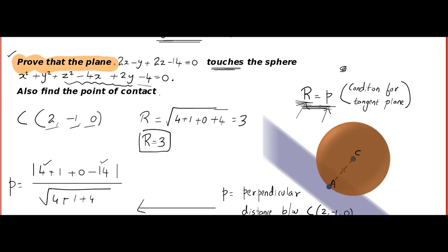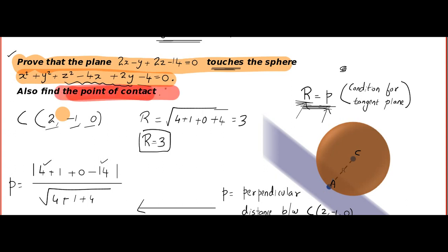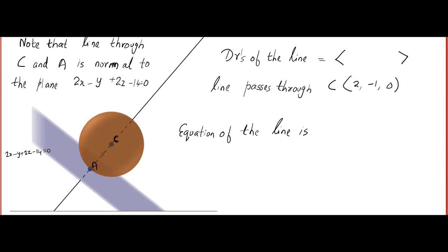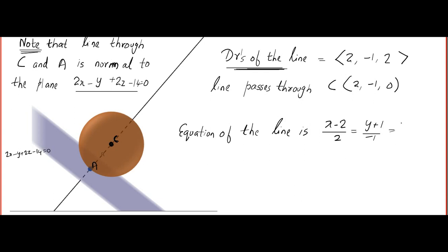Now the difficult part: find the point of contact. The key fact is that the line from the center to the point of contact is normal to the tangent plane. So the direction ratios of the line are the normal direction ratios of the plane: (2, −1, 2). The line passes through the known center point (2, −1, 0), so its equation is (x−2)/2 = (y+1)/(−1) = (z−0)/2 = t.